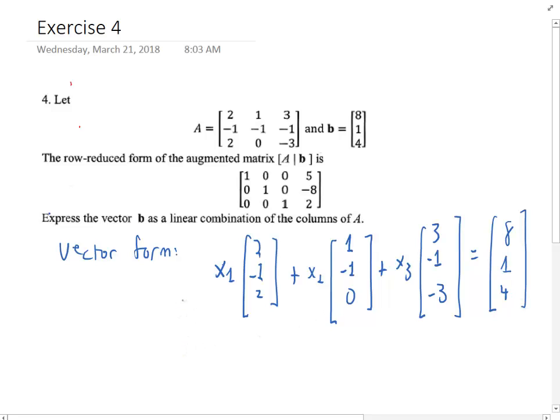All right, so when you're solving the system, you're actually finding these coefficients that express [8, 1, 4] as a linear combination of these three vectors. Now, how do you get these three coefficients?